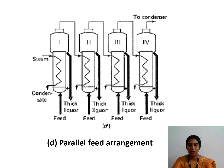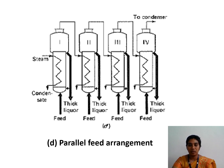Next is the parallel feed evaporator. This type of evaporator is used in sugar industries where the feed enters the first evaporator and is collected in that same evaporator. Then fresh feed enters the second evaporator and is collected there, similarly for the third and fourth. In this case, only the steam is taken forward to all the evaporators.